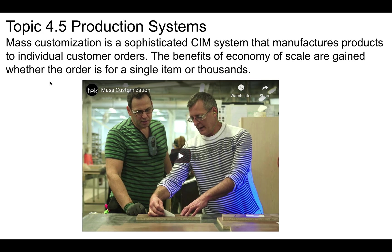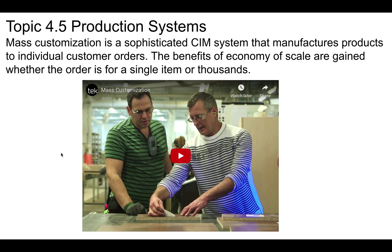This is called mass customization. These are companies that can produce things like they are mass produced, but you can customize things. Please do watch this video and see what they're talking about — it's a couple of minutes. This connects with computer integrated manufacturing systems. Basically it will produce things for customer orders, so you can benefit from economies of scale like with mass production, but you can produce something that's a single item for basically the same cost as producing something for thousands of items.